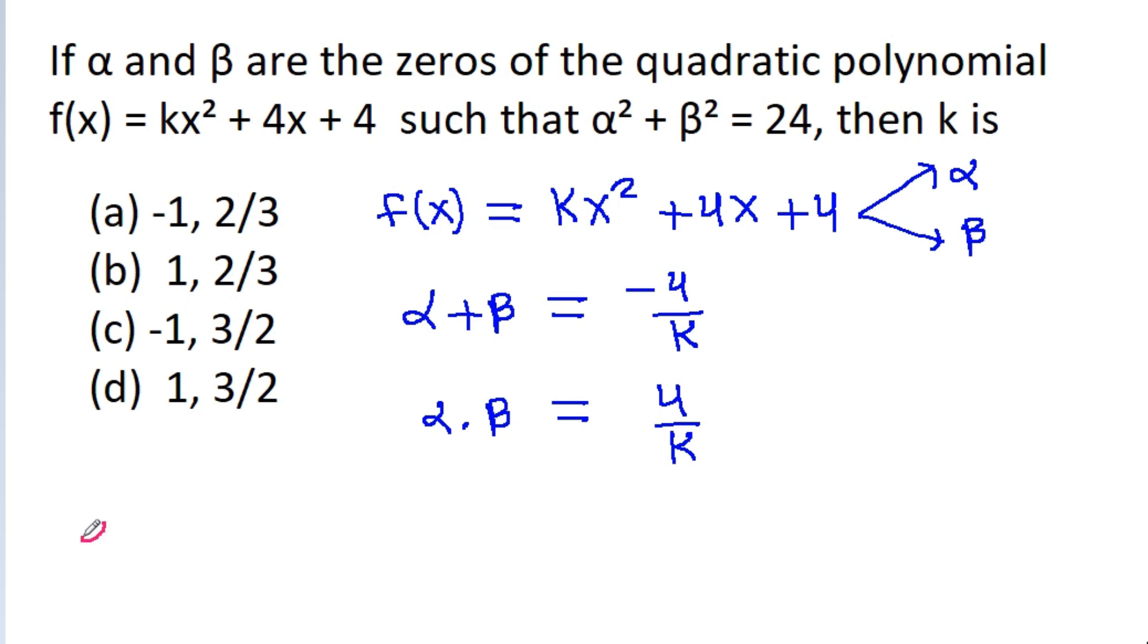And (α + β)² will be equal to α² + β² + 2αβ. And α + β is -4/k, so (-4/k)² equals α² + β² which is 24, plus 2 times αβ which is 4/k.